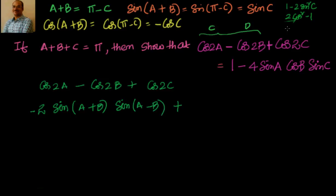For cos2c, I have to write it as 1 minus 2sin²c or as 2cos²c minus 1. If I check here, sin of a plus b is equal to sinC. That means sinC I can take common. So what I will write — I will write it as 1 minus 2sin²c.